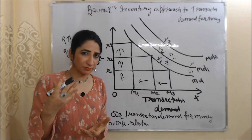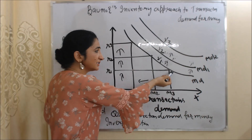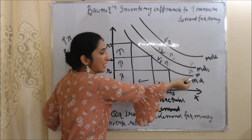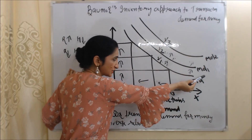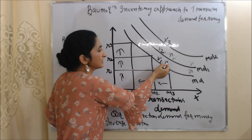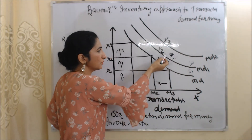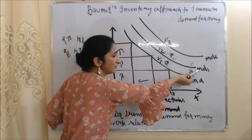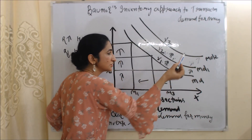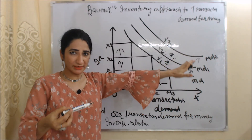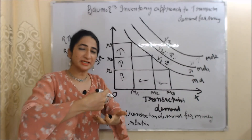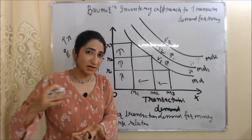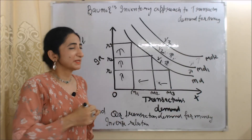So we can say that interest rate and transaction demand for money have an inverse relation. Second, our transaction demand for money also depends on our income. The three curves represent different income levels. MD represents money demand for transactions and Y represents income. As income increases from Y1 to Y2 to Y3, our transaction demand for money also increases from MD1 to MD2 to MD3. So income and transaction demand for money have a direct relation, while interest rate and transaction demand have an inverse relation.